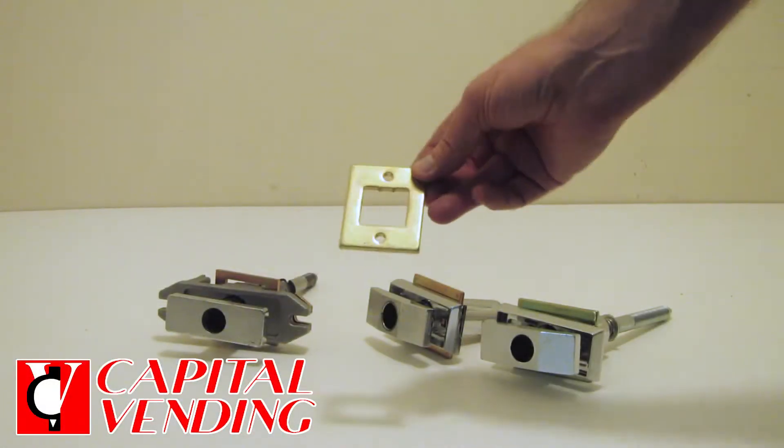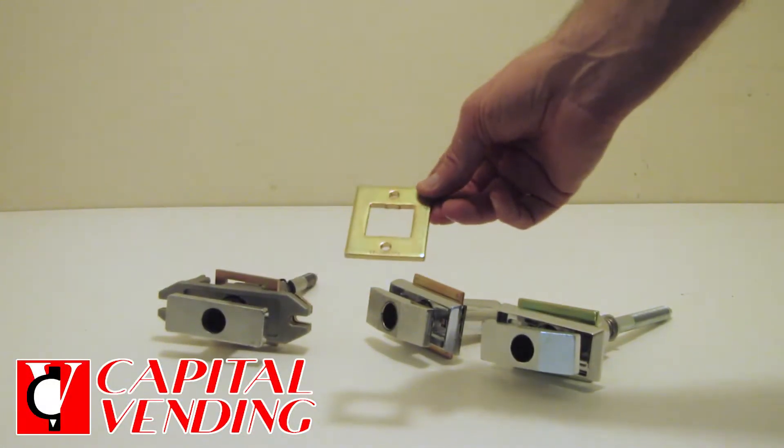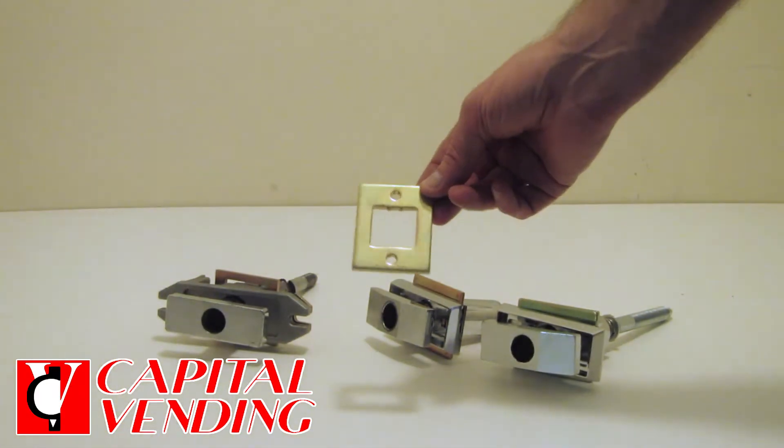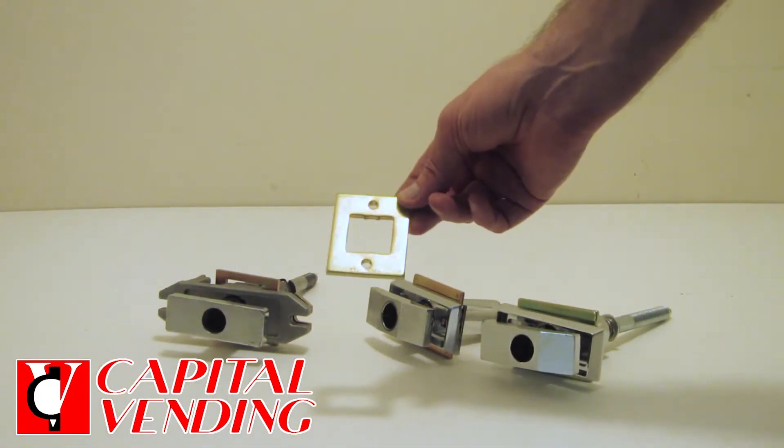Here's a bit of information on an armor plate we make. It actually comes in two varieties. This is the most popular one because it fits the most machines, bill changers, and vending machines.